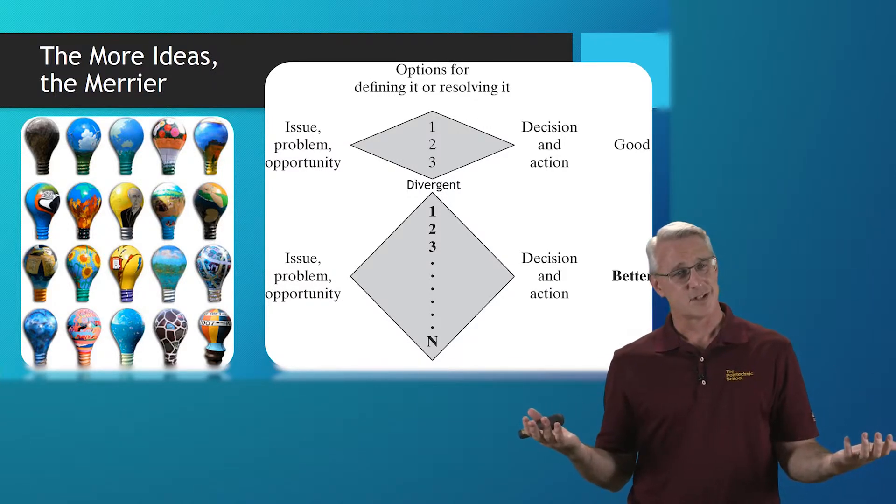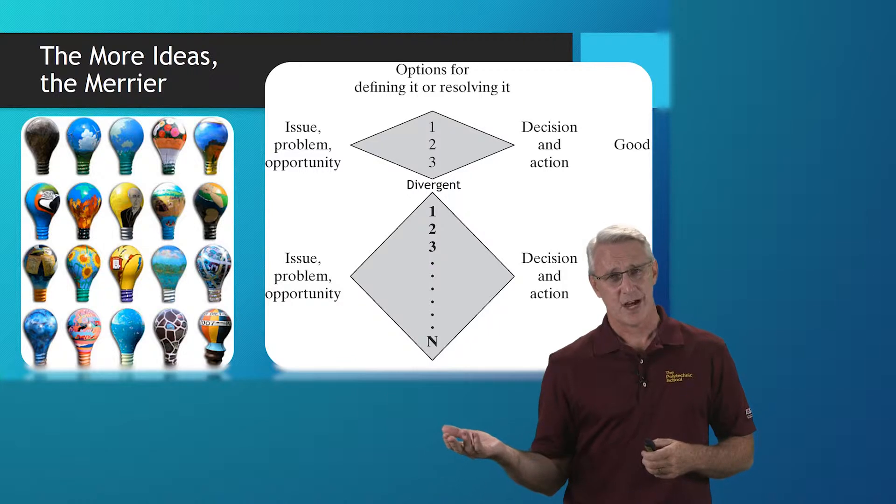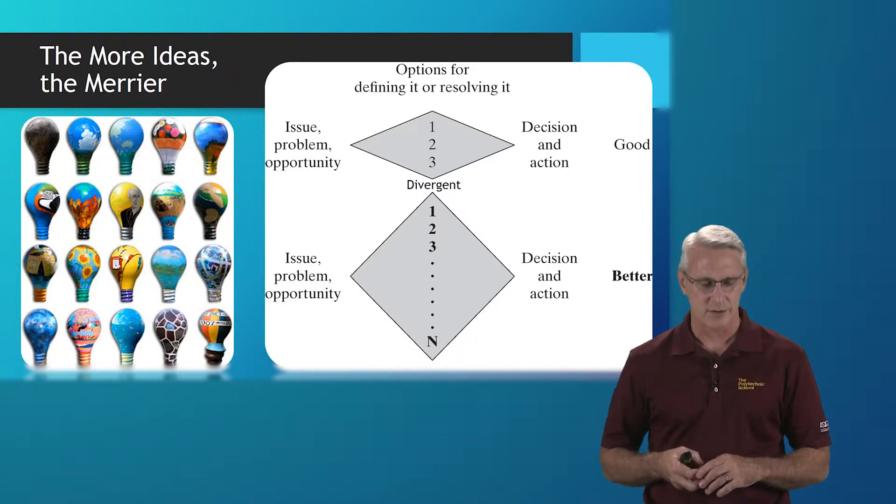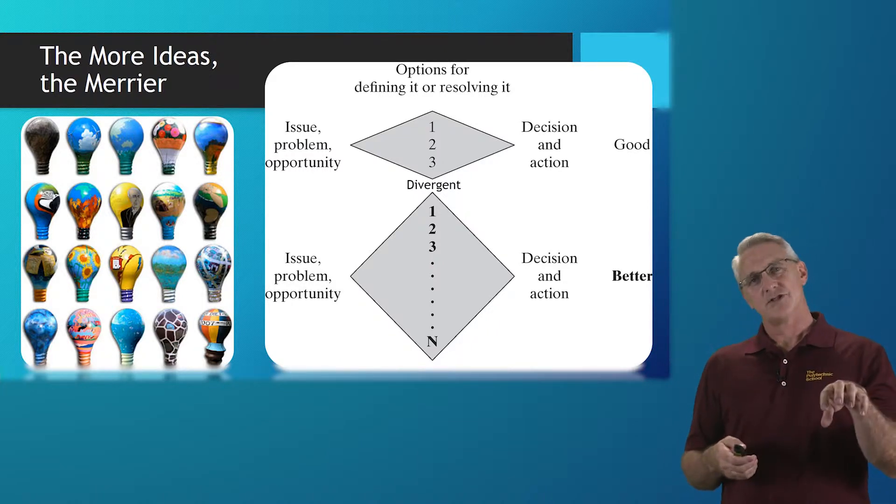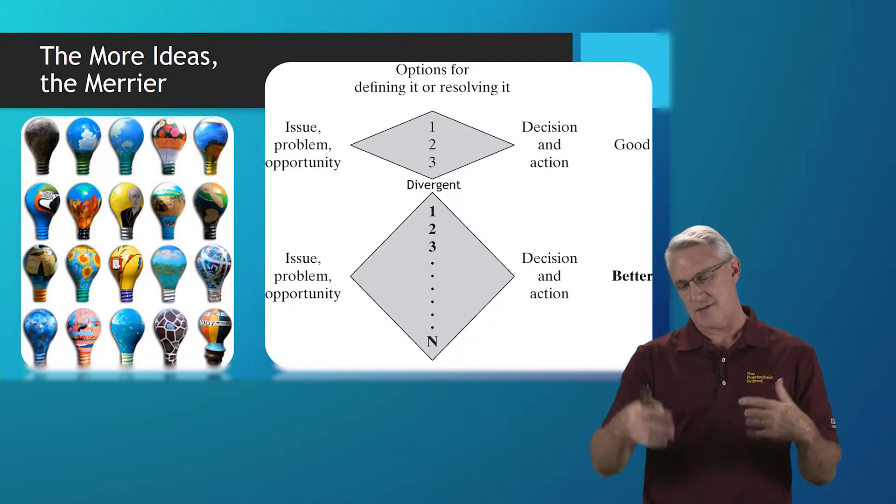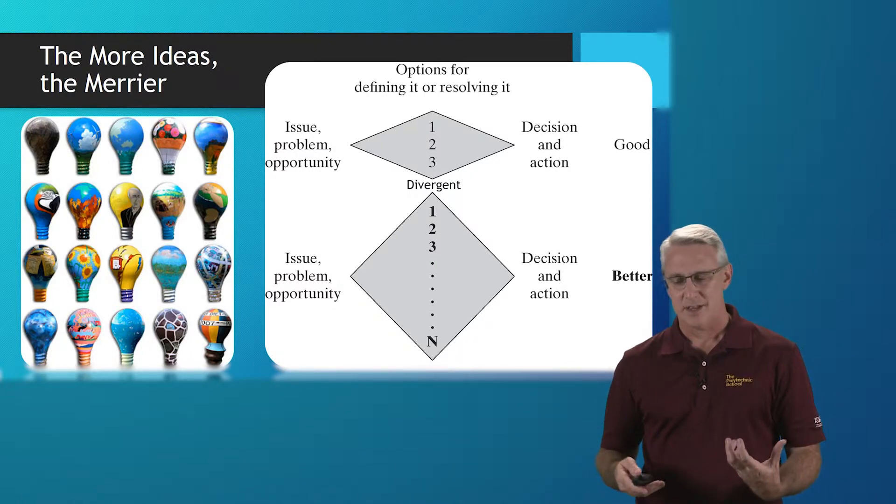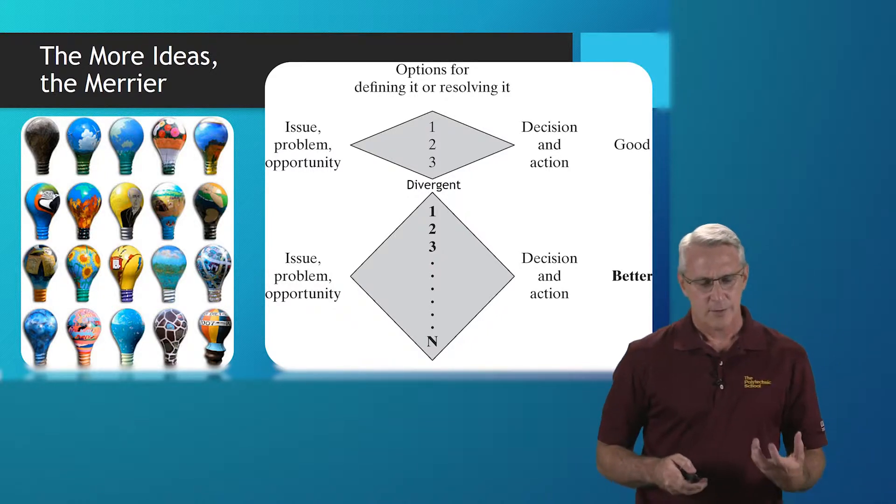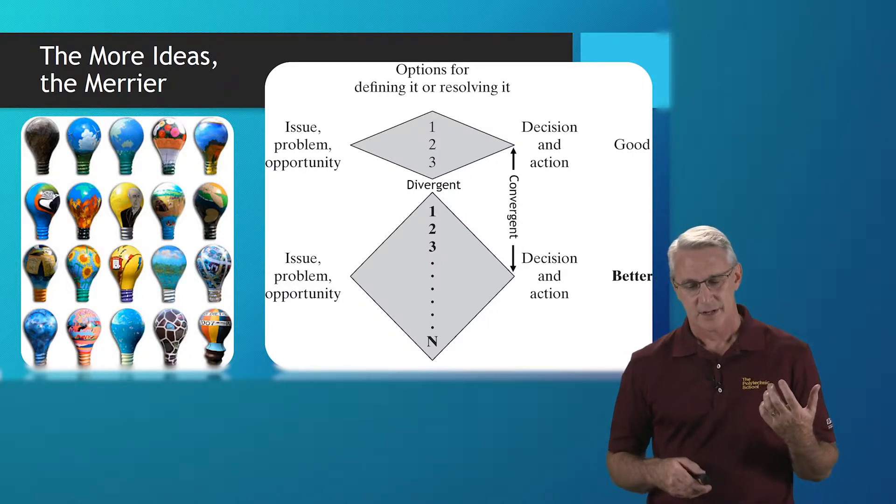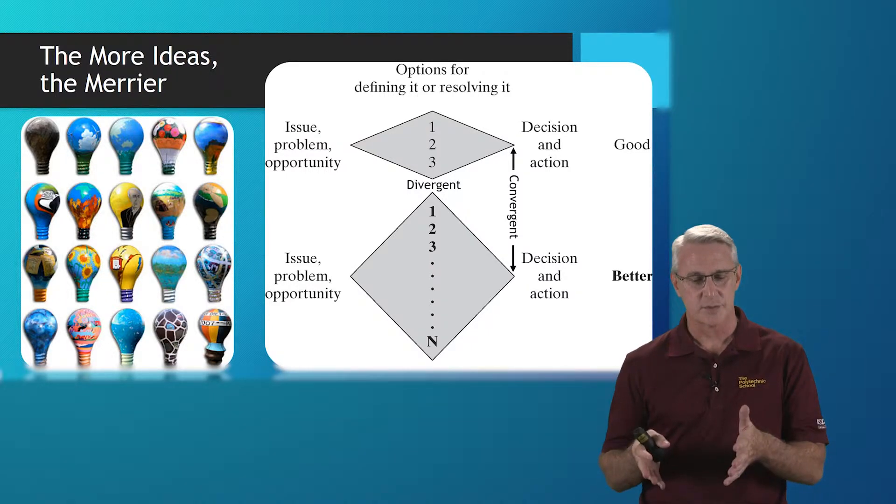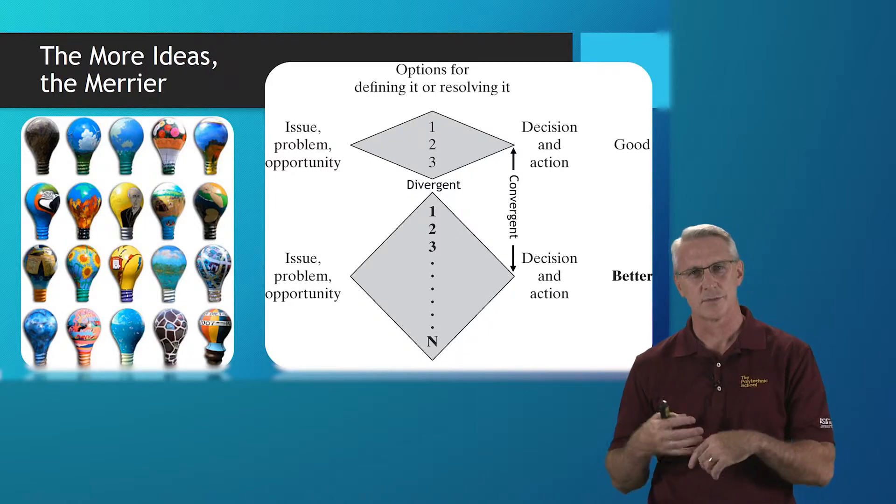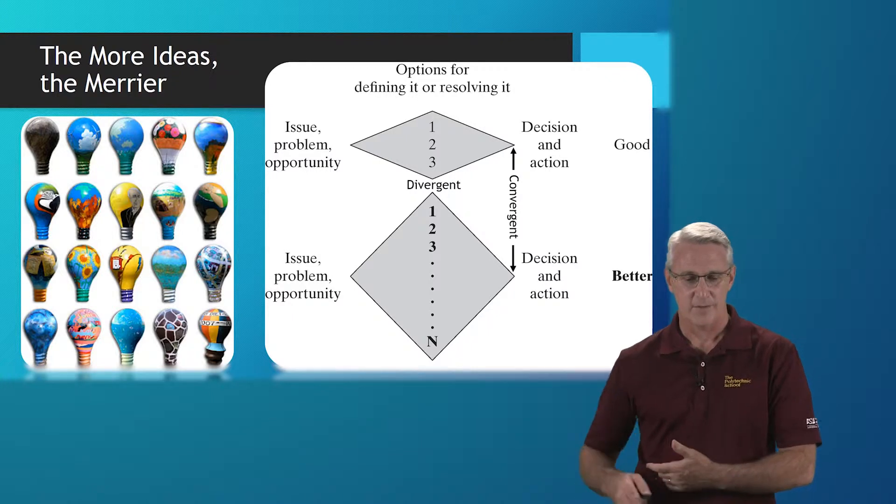This is where we want to get as many options for solving or coming up with opportunities. As you can see in the top diamond, if we only have three ideas, that gives us three to choose from. Whatever our decision or action is might be good, might be okay. But maybe it's not the best solution. What we'd rather do, if you look at the bottom diamond, is take that issue, problem or opportunity, and when we go to the divergent idea phase, let's get as many ideas as possible. We have one through N, as many ideas as we can. Then once we have tons of different ideas, the chances that we're going to have a really good one go up dramatically. That's the divergent process. Then in the end, the convergent process is when we whittle away which ideas are some of the best, which ones make most sense, which ones are implementable, so we can get to a decision or action and get a much better outcome.